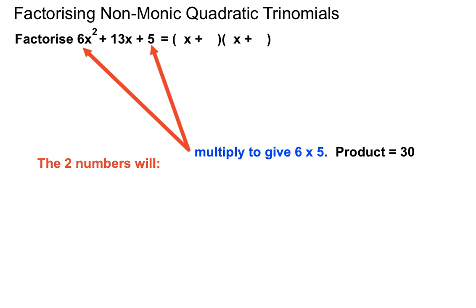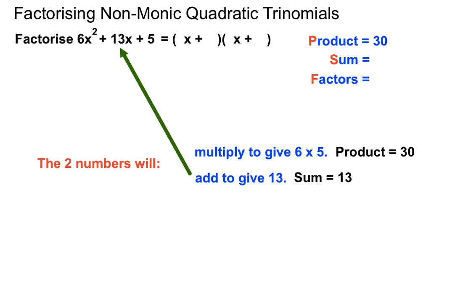So the product of those two numbers that we're going to put in those brackets will have a product this time of 30, not just 5. So if you've got a number out the front, it's got to multiply by the c number at the end there. So it's got a product of 30. And it's got to add together to give 13 in the normal way from our monic ones. So the difference here is for our product number we have to do that times that to get our 30.